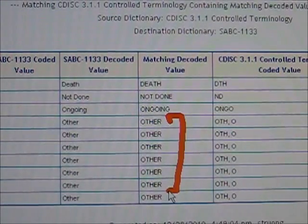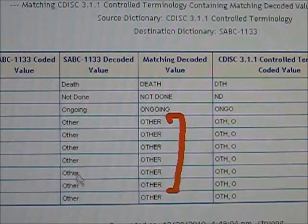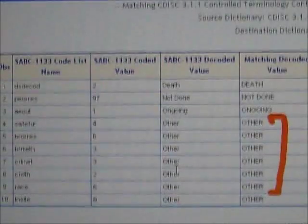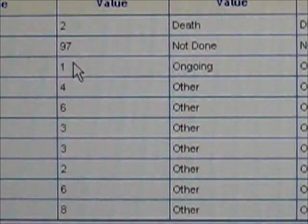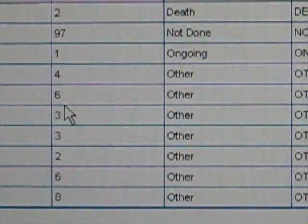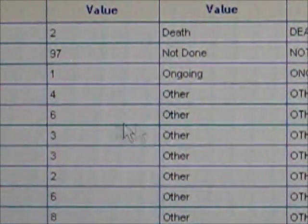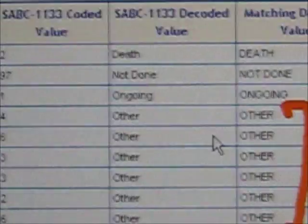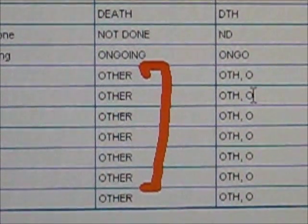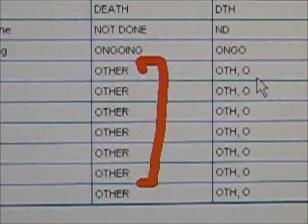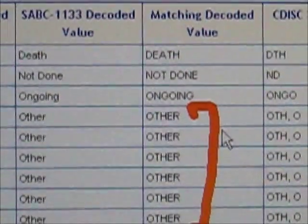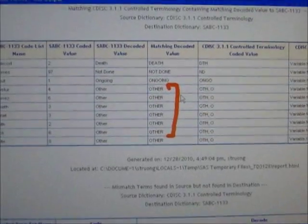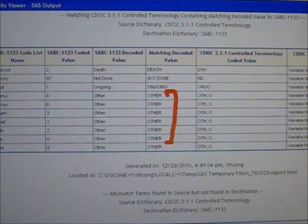Here's a series of the term 'other'. The code used in the study was actually inconsistent across different coded terms — some of them are 4, some are 6, and the decoded value is 'other'. But if you look at CDISC, it consistently uses 'OTH' for other. These are examples where you may want to correct your controlled terminologies to be consistent with CDISC.